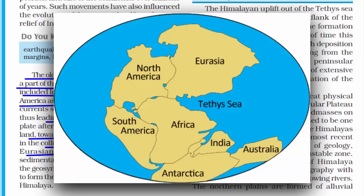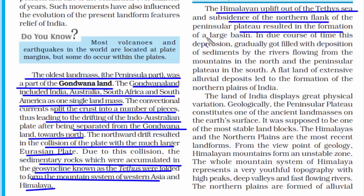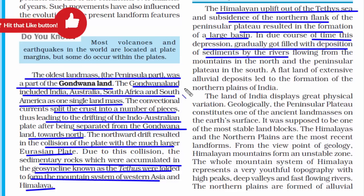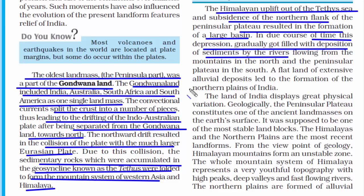Before this collision, there was water between the Indian plate and the Eurasian plate, called the Tethys Sea. The sedimentary rocks at the bottom of the sea started folding up, and as a result, the Himalayas were born — that's why the land is uplifted in northern India. To the northeast there was a huge depression — low land — which over time got filled with sediments brought down by rivers flowing from the northern mountains, which is why the Ganga and Brahmaputra drain in that region.